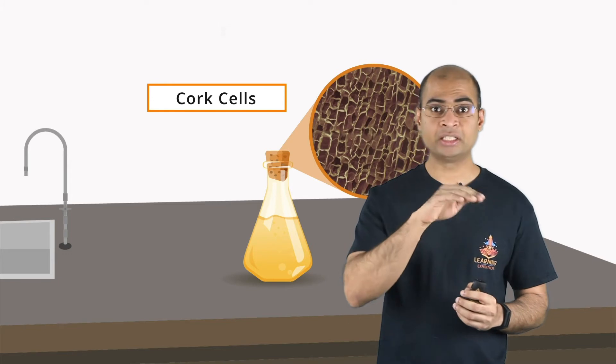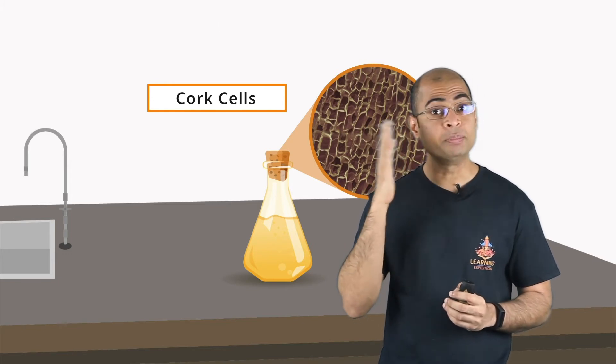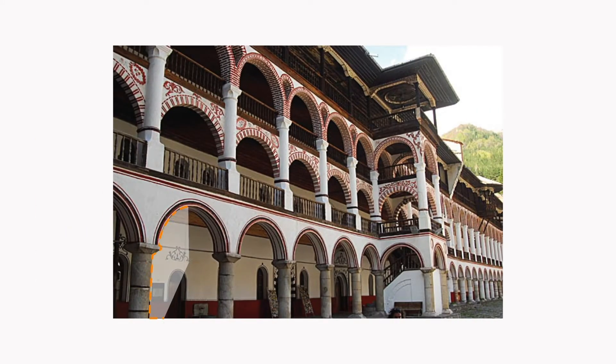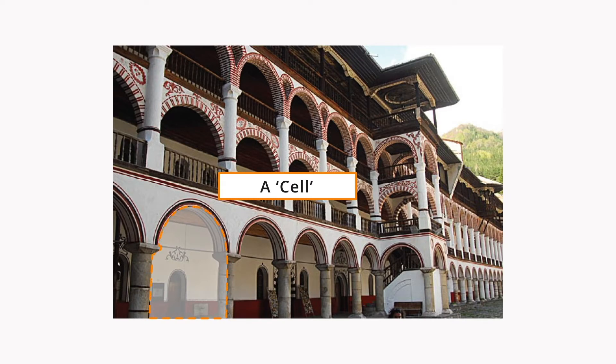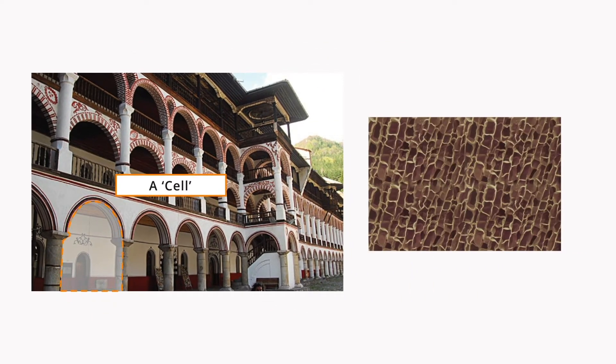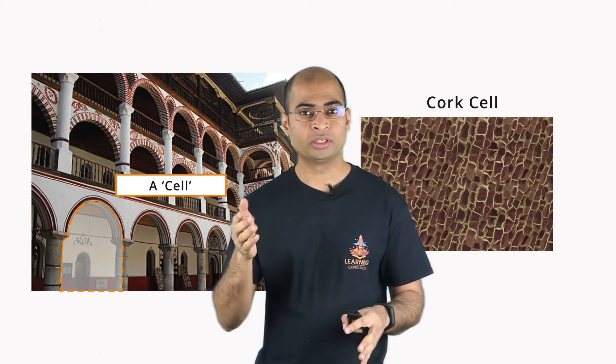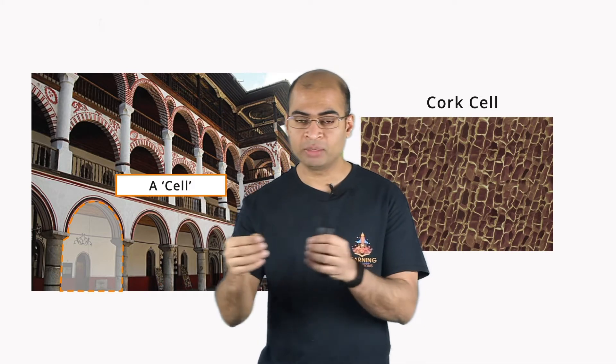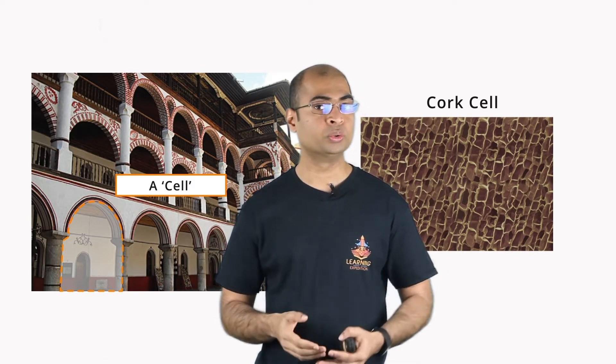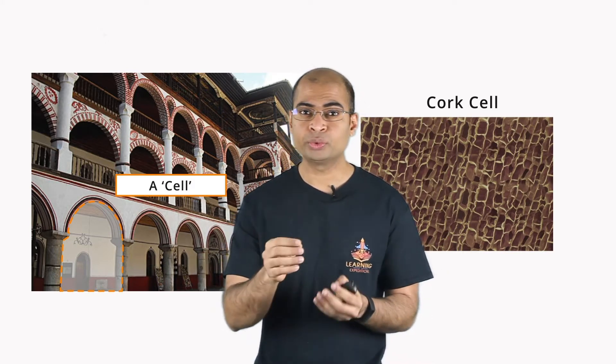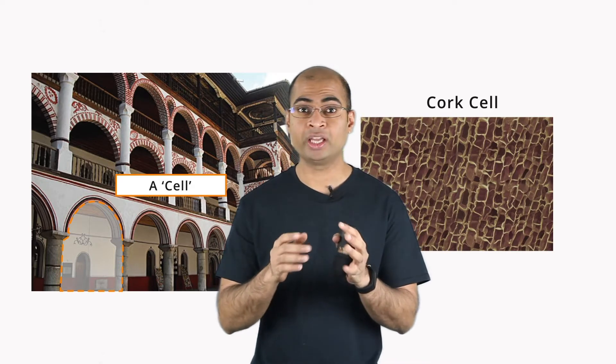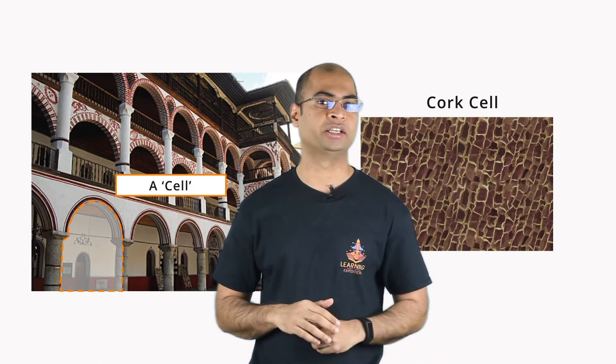This pattern that he saw actually reminded him of these small rooms in monasteries where monks and priests used to live at the time. And these were called cells. So Robert Hooke decided to name these building blocks that he saw in the pattern as a cell too. And actually, we use the same term cell today, almost 400 years later.